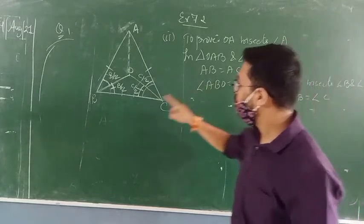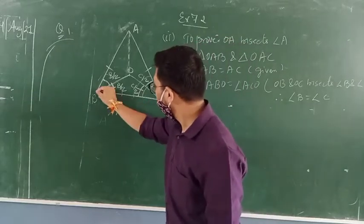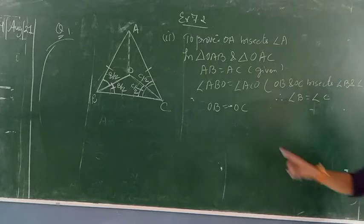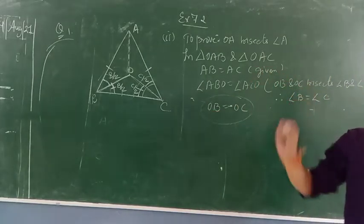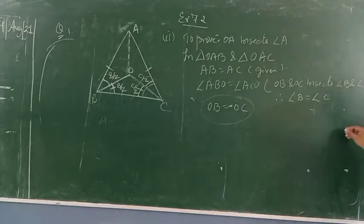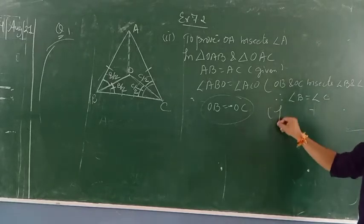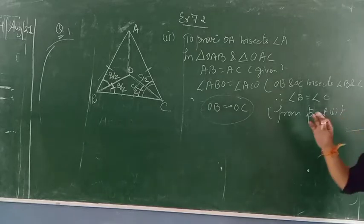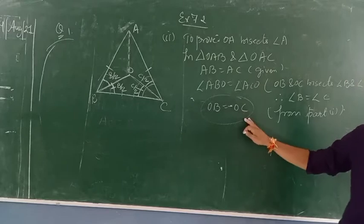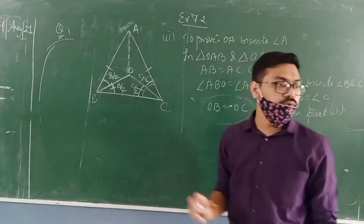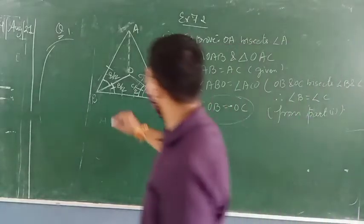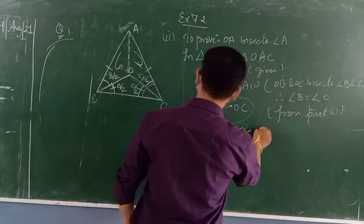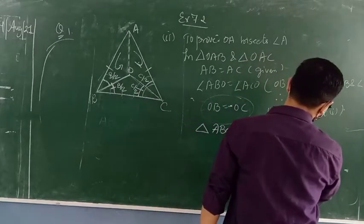OB equals OC — this thing you have proved from the last part. So using these three conditions, you can say triangle ABO is congruent to triangle ACO by side angle side congruency rule.